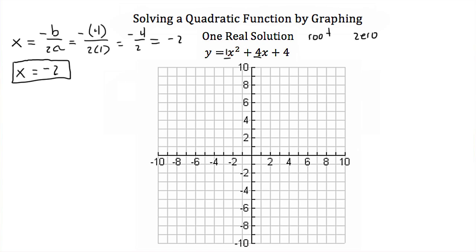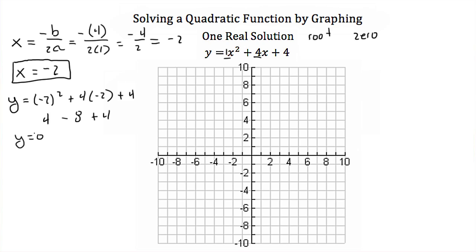Now that we've found our axis of symmetry, our vertex lies on that line, which means it has an x-coordinate of negative 2. So we'll plug in negative 2 back into our quadratic to find the y-coordinate of our vertex. We'll have y is equal to negative 2 squared plus 4 times negative 2 plus 4. Negative 2 squared is 4, and 4 times negative 2 is negative 8, then plus 4, giving us y is equal to 0. So our vertex is the point (-2, 0).